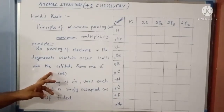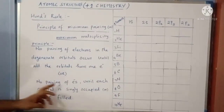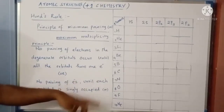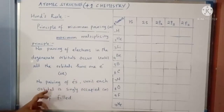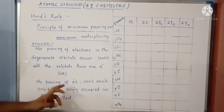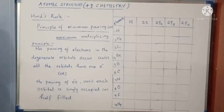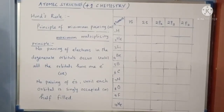This can be simply stated as: no pairing of electrons until each orbital is singly occupied. Degenerate orbitals are orbitals such as Px, Py, Pz, which have equal energy, and similarly Dx, Dx²-y², and Dz² for D orbitals. While filling electrons in such degenerate orbitals, first each orbital should get one electron, then only you can start pairing.